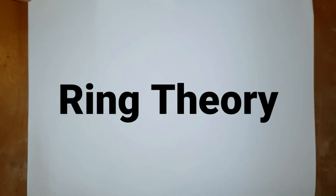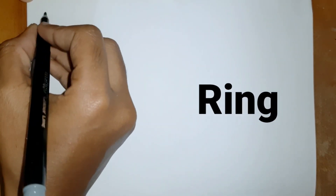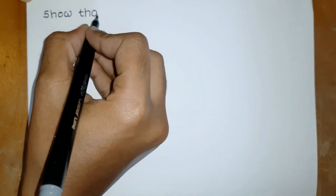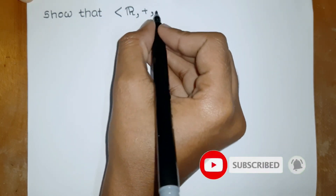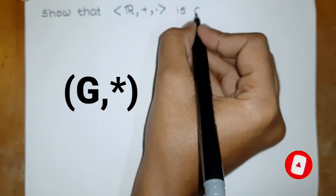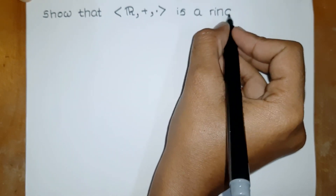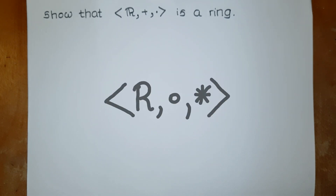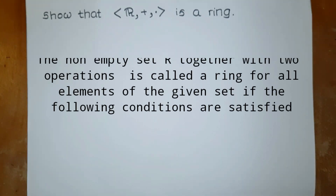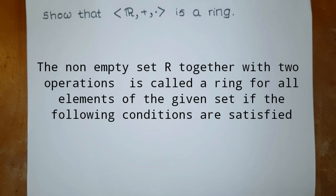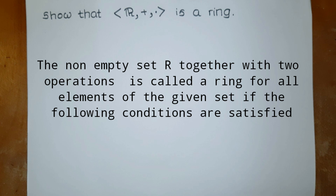In this video we learn about ring theory with a simple example. Here is the definition of a ring. As you know, if you consider a group, you have only one operation, but here we have two operations, like in a vector space. A non-empty set together with two operations is called a ring.